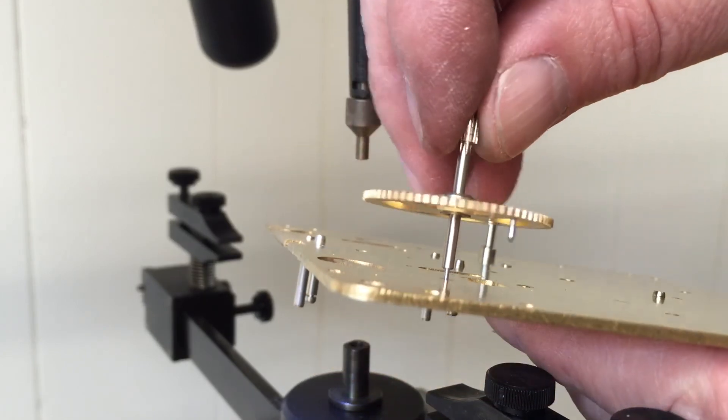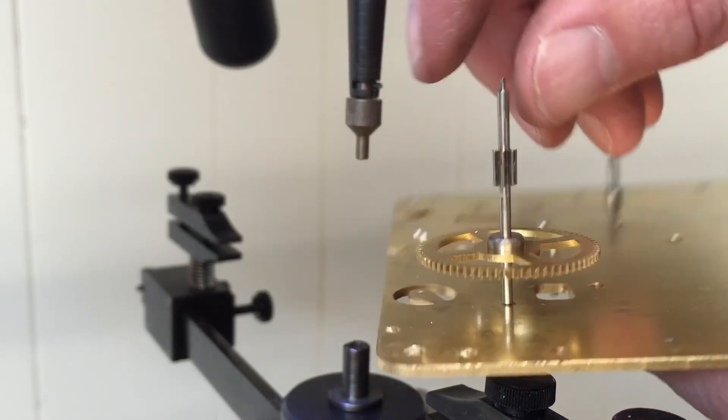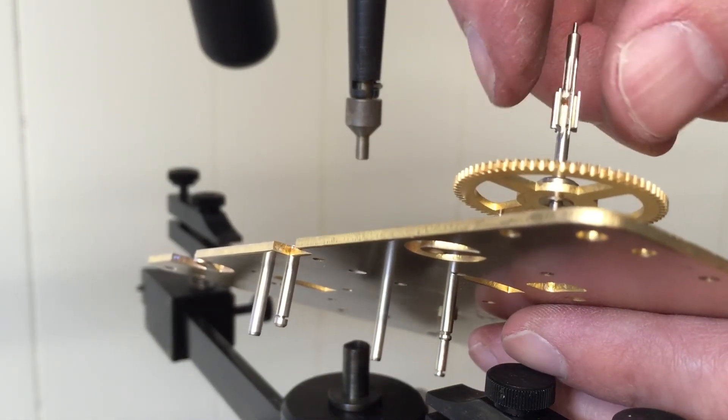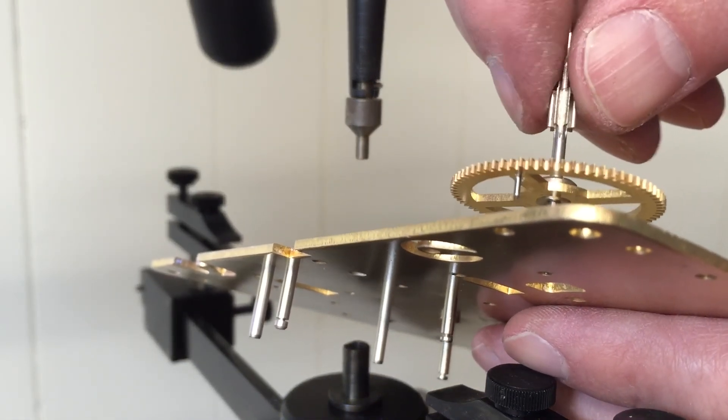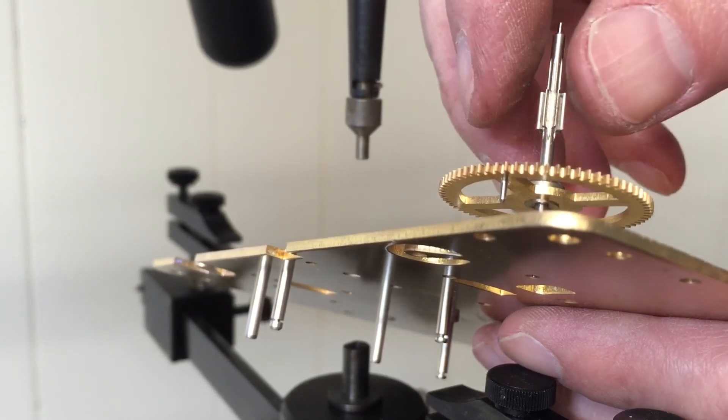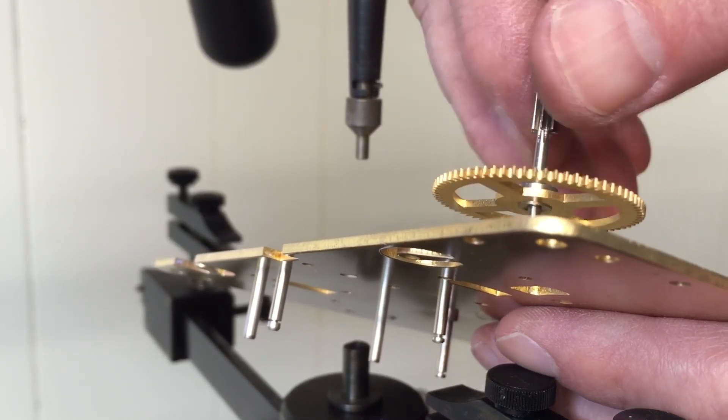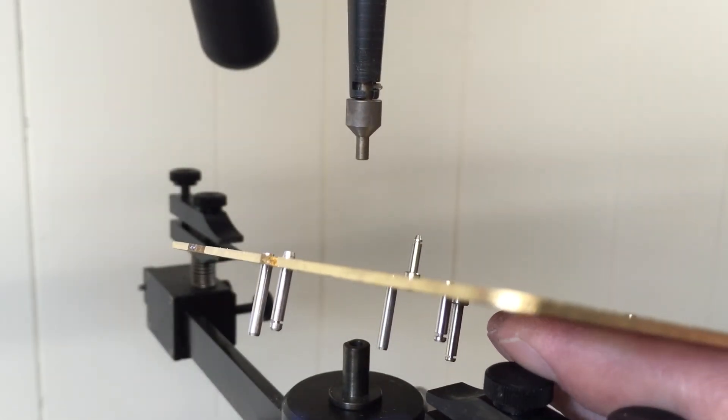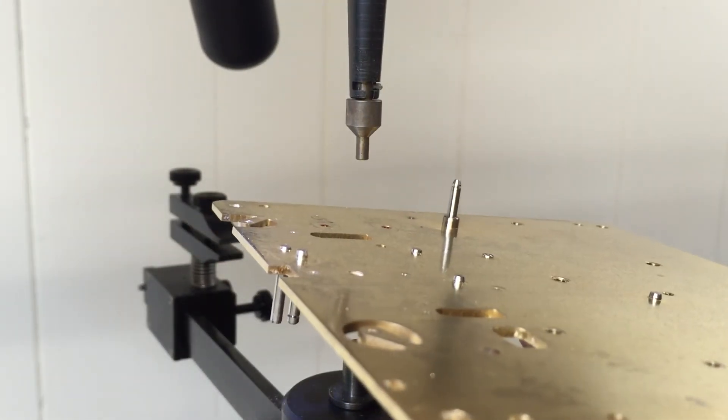I'm going to ream that very carefully with a cutting broach, then use a smoothing broach to fix it. That's how you rebush a plate.